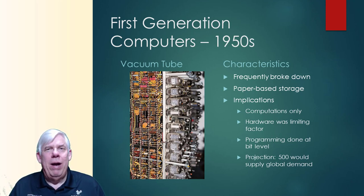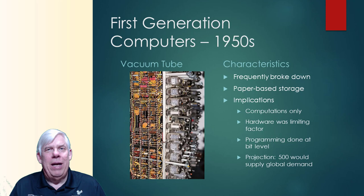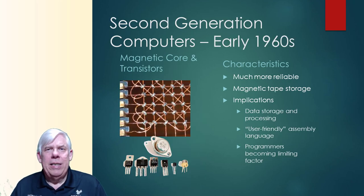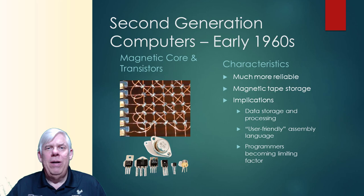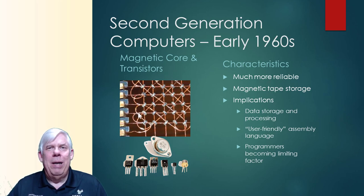When they needed to be programmed, they were programmed at the bit level because it was too expensive to include programming tools within the machines. Around the time these machines came out, there were projections that the entire world's demand for computing could be met by 500 computers. Moving on to the early 1960s, a couple of major technological improvements took place. First off, we started to use transistors instead of tubes for the computer's logic. We also developed a new way of storing random access memory called magnetic core memory.